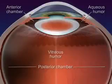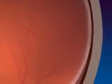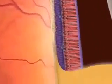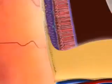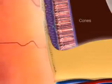The retina is the inner layer and contains the nerve cells — the rods and cones — and the bipolar cells. Rods are sensitive to light but do not sense color. Cones sense color.